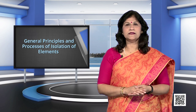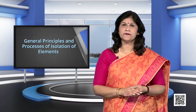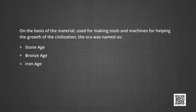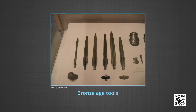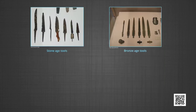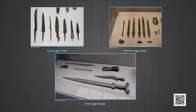You must have studied in your history classes about the evolution of human civilization. On the basis of the material used for making tools and machines for helping the growth of civilization, the era was named as Stone Age, Bronze Age, Iron Age, etc. Thus, the development of human civilization passed from the Stone Age to Bronze, then to Iron and now to a modern developed society, a society that is dependent on metals and alloys for its very existence.